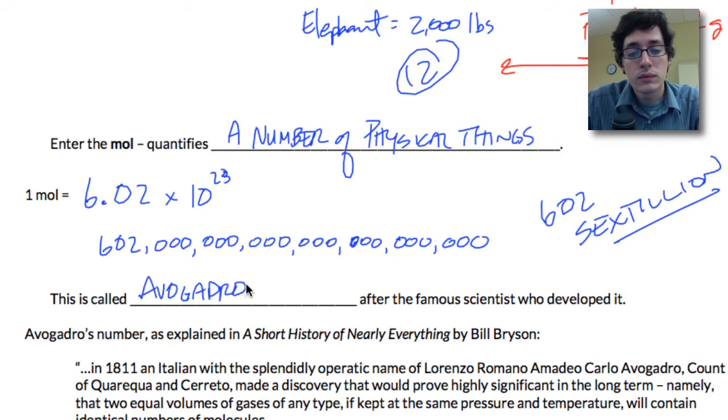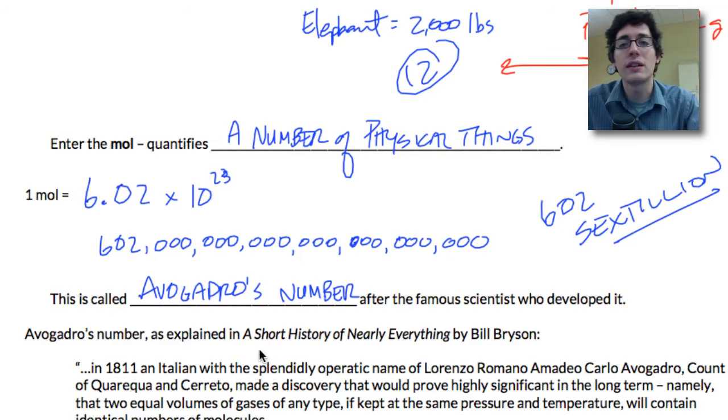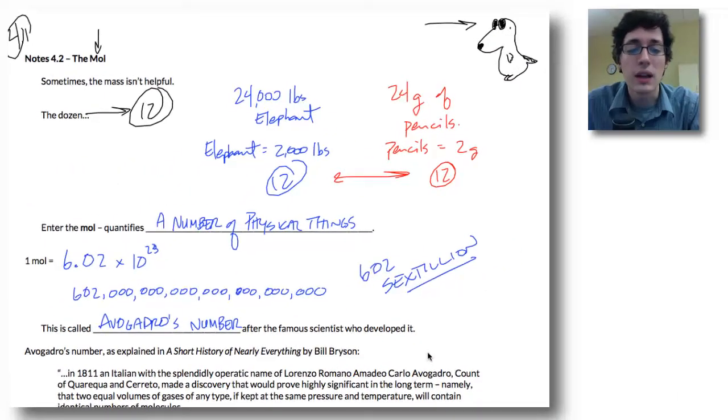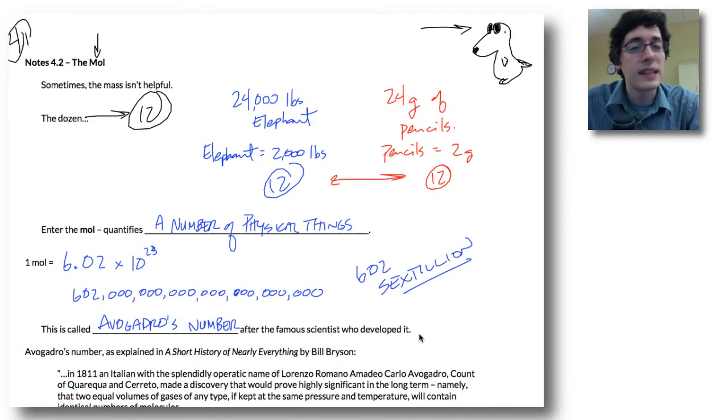Avogadro. And he was an Italian scientist who kind of developed this idea. They didn't really pinpoint the number down until after he died, and you saw that in that TED video that you watched at the start of this section.